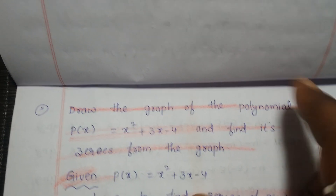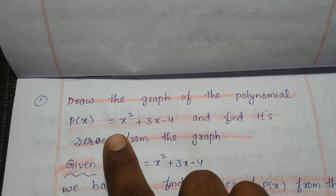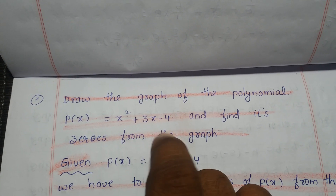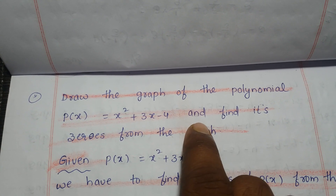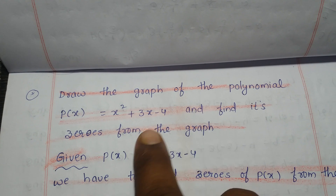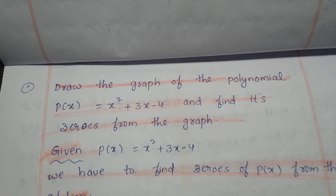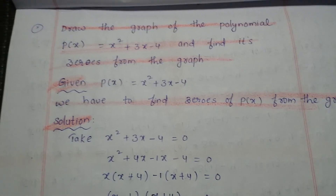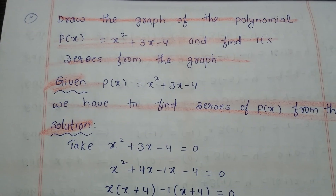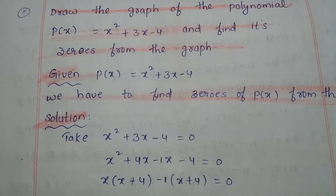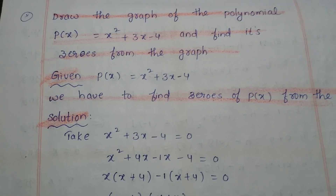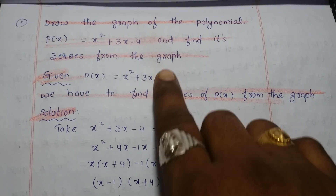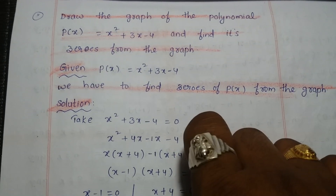Draw the graph of the polynomial p of x is equal to x square plus 3x minus 4 and find its zeros from the graph. Given p of x is equal to x square plus 3x minus 4, we have to find the zeros of the polynomial from the graph.